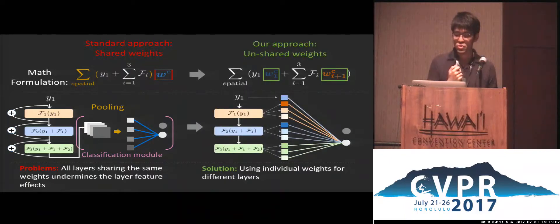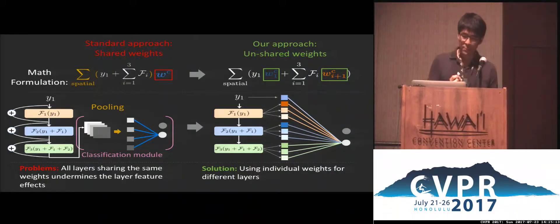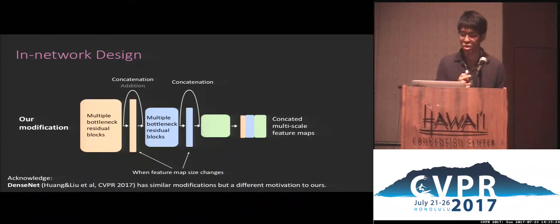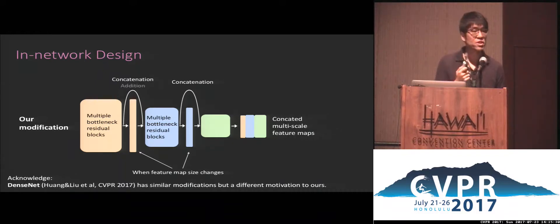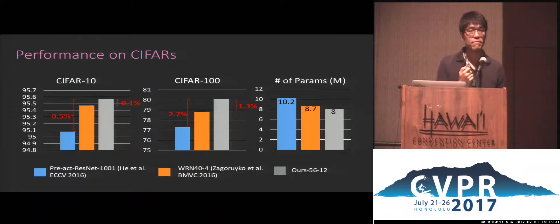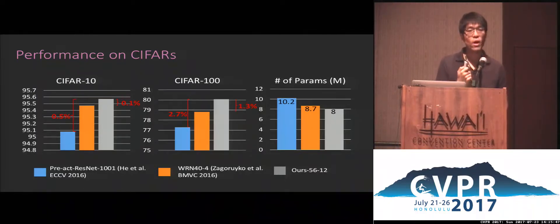In our method, we try to decouple the outputs from different layers and use individual weights to decide their importance. To realize this idea, we simply modify the skip connections between ResNet blocks so that feature maps change from addition to concatenation, encouraging multi-scale information in the last layer. Note that we use very simple changes and nothing else. We demonstrate the effectiveness of this on the CIFAR dataset, compared with ResNet with 10 million parameters and wide ResNet with 8.7 million parameters. Our method with only 10 million parameters achieves quite significant improvement.